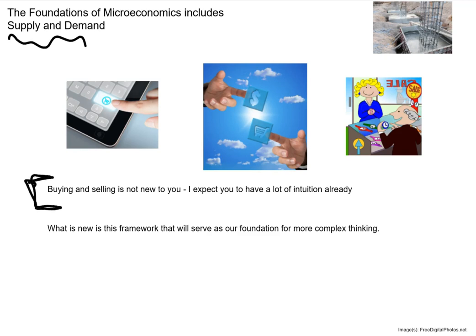It's based on this story we've already been telling about consumers wanting to buy stuff and producers wanting to sell stuff. You've already got a whole lot of intuition about the way this model is going to operate. What we're going to do is put together a framework that will allow us to do more complex thinking, but for the most part this is a topic that's all about common sense — a very logical intuition you're probably already going to bring to the table.